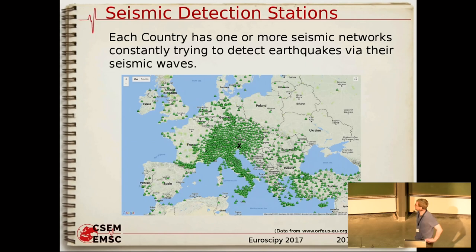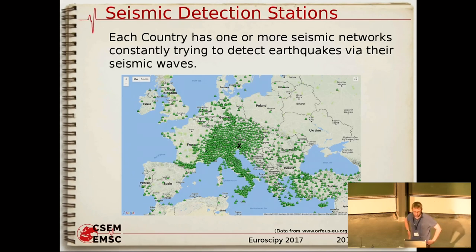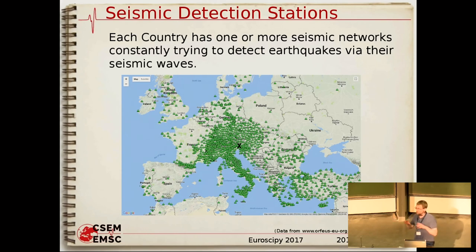The map shows seismic detection stations in Europe — it's particularly dense in Italy and Austria, but lots of parts of the world are less dense. Each organization monitors the seismic waves and tries to detect earthquakes from those waves. They can normally do that automatically in a few minutes, but it does take a few minutes mostly because earthquake waves have a limited velocity and you need a certain number of stations to triangulate the origin and time of the earthquake.